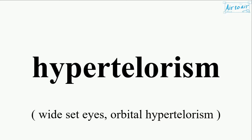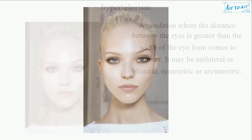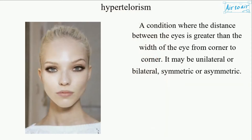Hypertelorism: a condition where the distance between the eyes is greater than the width of the eye from corner to corner. It may be unilateral or bilateral, symmetric or asymmetric.